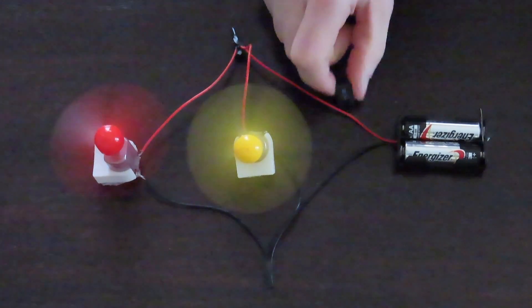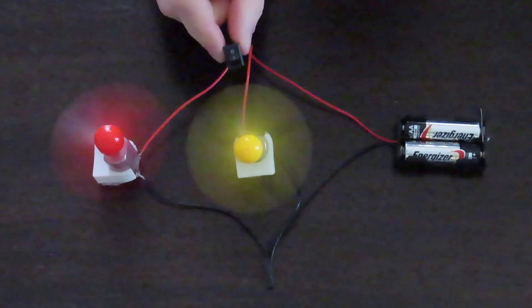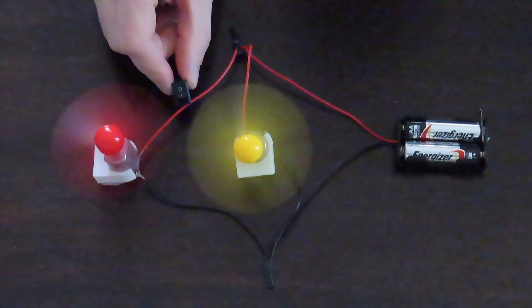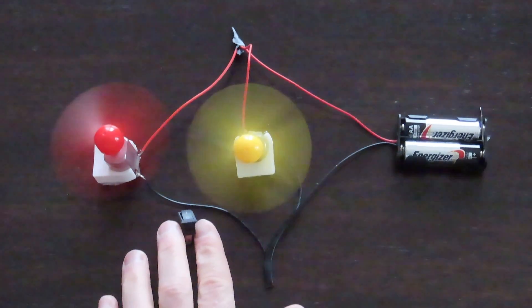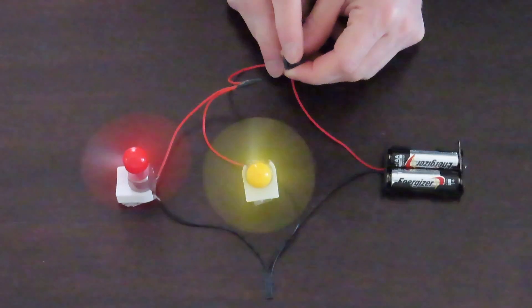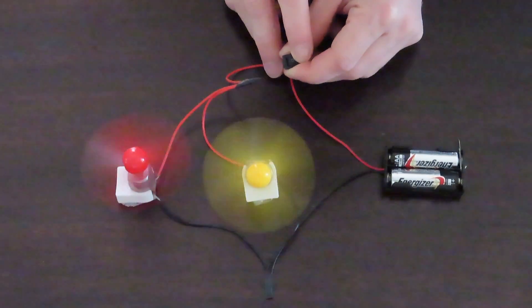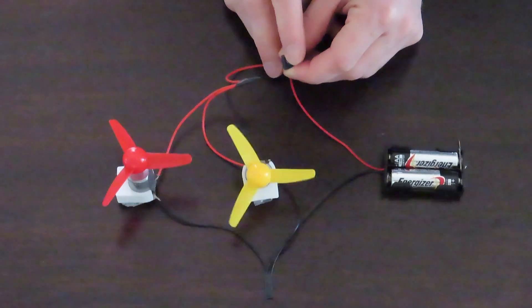Now we can wire a switch anywhere along the paths, but unlike the series circuit, different placements of the switch can have different effects. If I wire a switch next to the battery and before it branches onto the two different paths, it will turn on and off both of the motors.